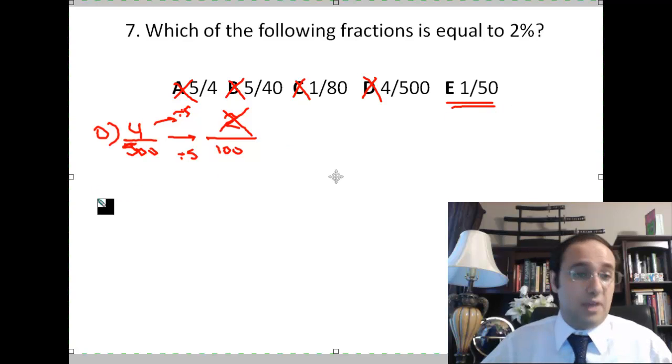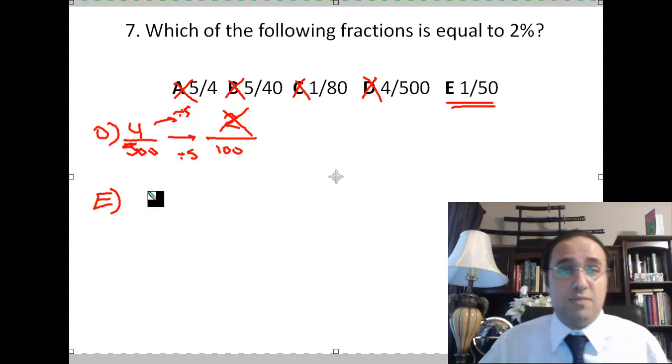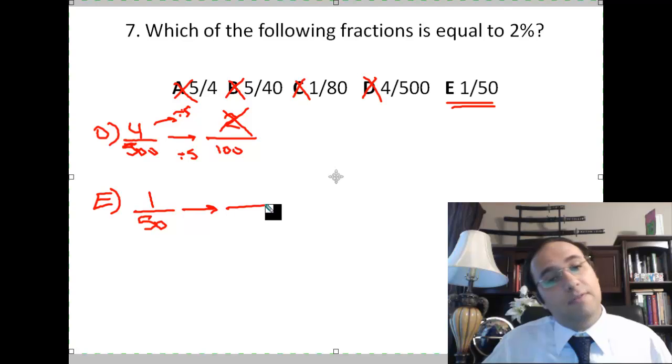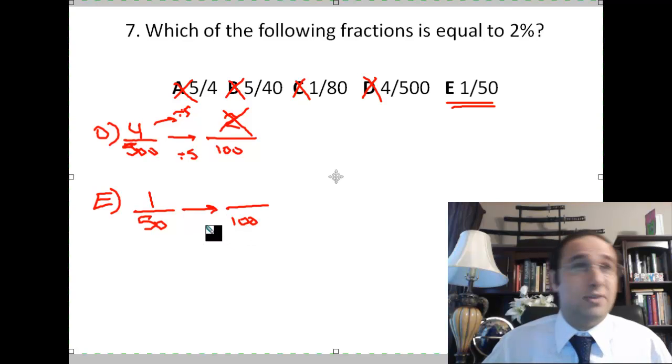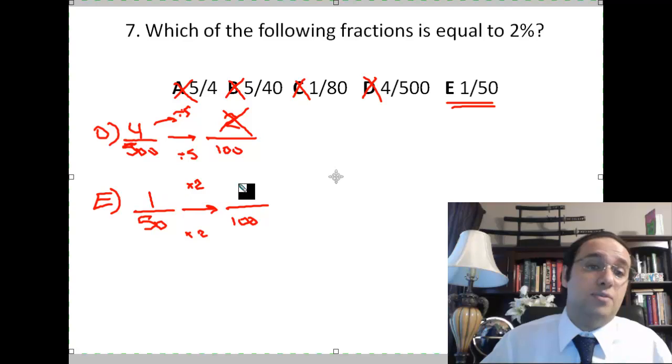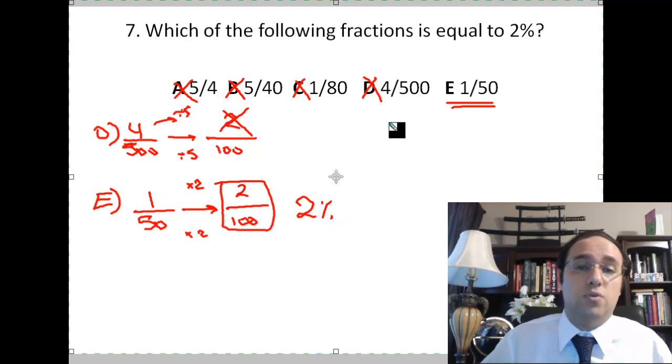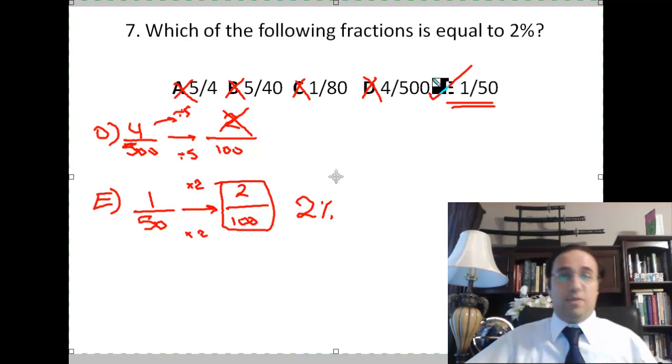How about E? Let's try E. It is probably the right answer because it's the only one left unless I made a mistake somewhere. 1 over 50. I want the 50 to become 100. That was easy. Times 2. So I need to multiply times 2 up here. 1 times 2 is 2. So the answer is 2 over 100, which is 2 percent. So the answer is E.